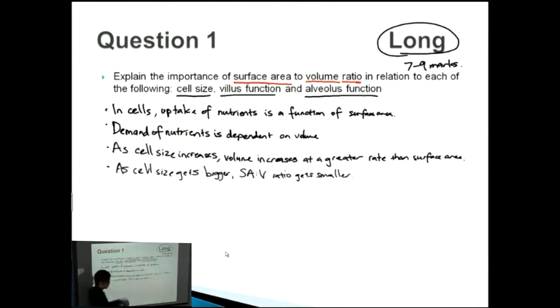This is why cells can't be too big. You don't have cells the size of a watermelon - they're usually quite small because the surface area to volume ratio needs to be high enough so that nutrients can come in and out.